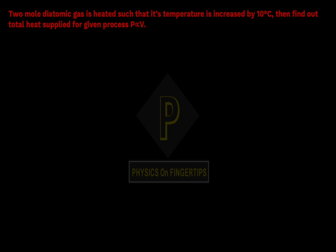Our next question is: 2 mol diatomic gas is heated such that its temperature increases by 10 degree Celsius. Then find out total heat supplied for the given process where p is proportional to V.